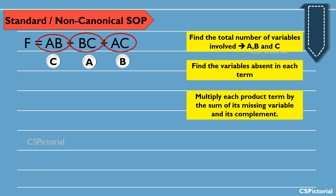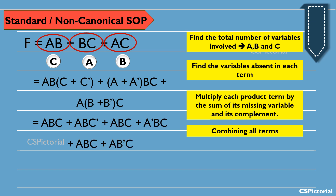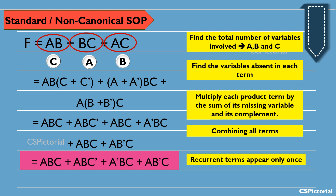Now multiply each product term by the sum of its missing variable and its complement. The expression is written as A·B·(C + C̄) + (A + Ā)·B·C + A·(B + B̄)·C. Combining all the terms, it becomes A·B·C + A·B·C̄ + A·B·C + Ā·B·C + A·B·C + A·B̄·C. Making repeating terms appear only once, the expression becomes A·B·C + A·B·C̄ + Ā·B·C + A·B̄·C, which is the final canonical SOP expression.